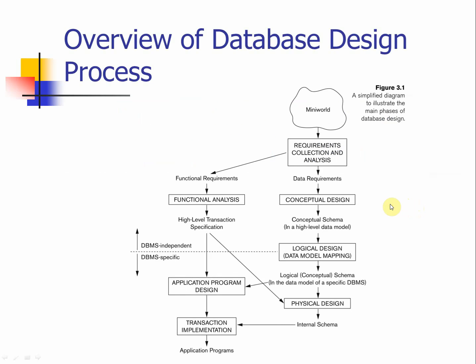Remember this picture — it says that if you are going to create a database, you need to start with a mini world application, try to understand it, and then based on the mini world requirements like our company database, we need to go into the data requirements as well as functional requirements. You practiced this in project number one, and then based on the data requirements you look into the conceptual design where you define your ER diagram.